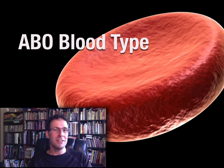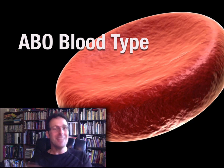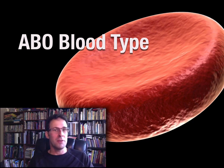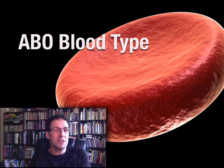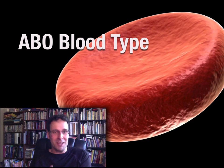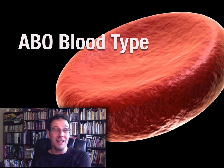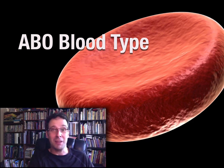We'll also look at the inheritance of ABO blood type and its importance in terms of immunity and antibodies. I mean, why, for example, if you give O-type blood in a blood transfusion to somebody who has A-type blood, can you save their life?